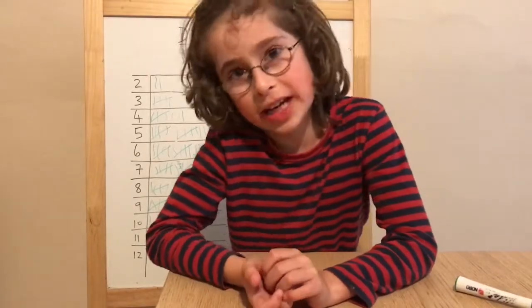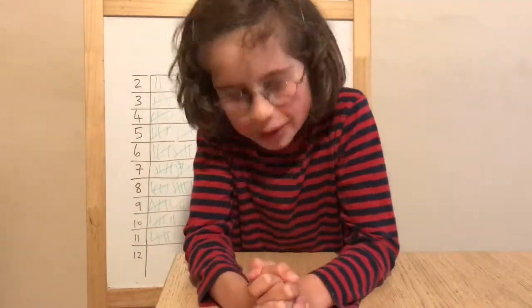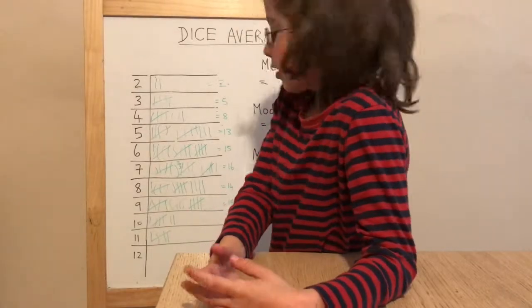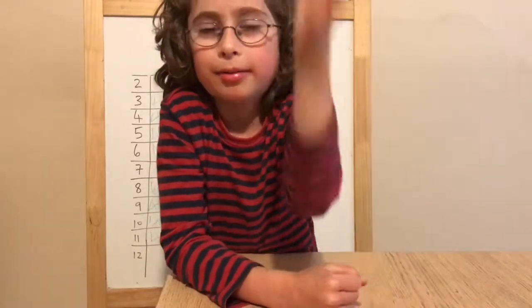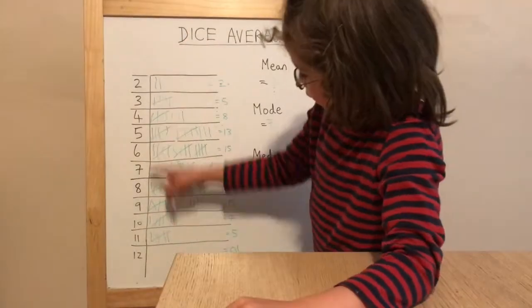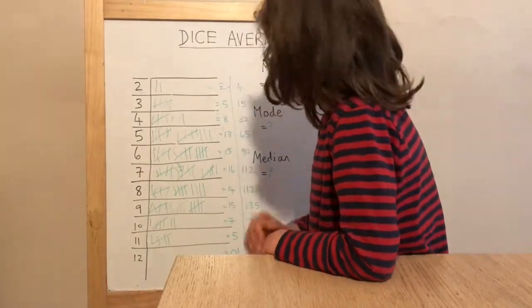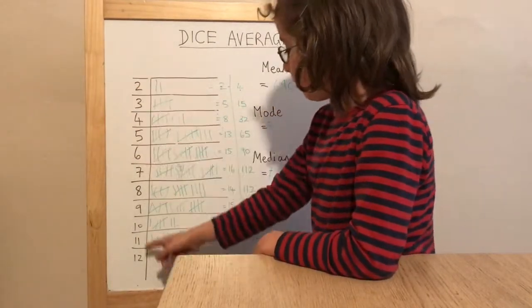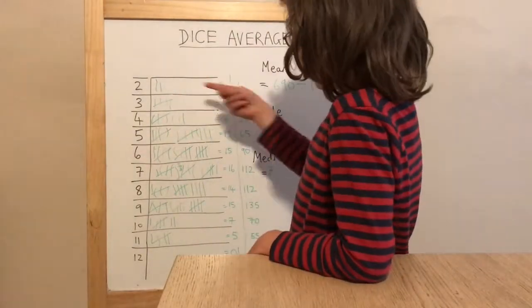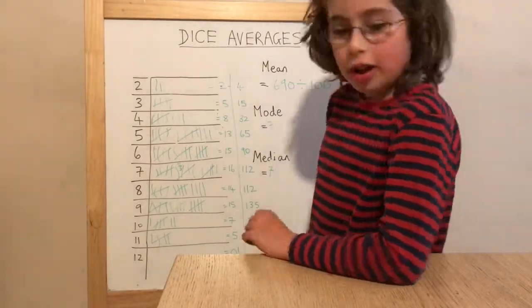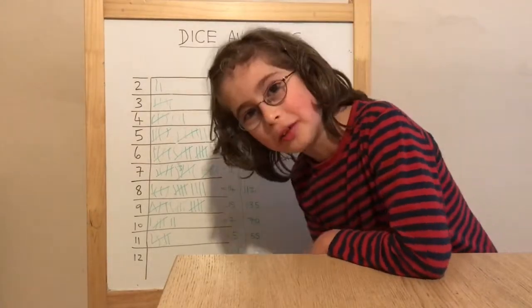Now we're gonna calculate the mean, and it's gonna use a lot of math to figure out the mean. We're gonna have to count every single result and divide it by the number of different things we have here. So we know there's a hundred. We just times the number we're on by how many tally marks they add — we got four for that, and so on. We added it all up, and you see we've got this equation up here — that number is all of that added up.